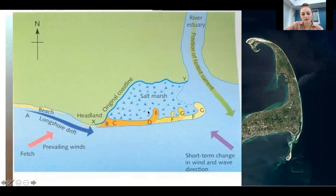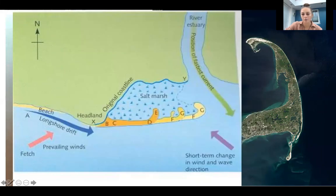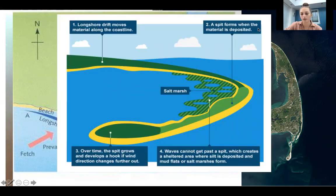Behind a spit, salt marshes form because there is very little water movement — the spit shelters the water from waves, so there's minimal movement. Salt marshes or mudflats start to form behind the spit. Spits quite often form along a river estuary where the river meets the sea. Waves can't get past the spit, creating a sheltered area where silt is deposited, forming mudflats or salt marshes. Over time, the spit grows and develops a hook-like shape at its end, caused by a change in wind direction.